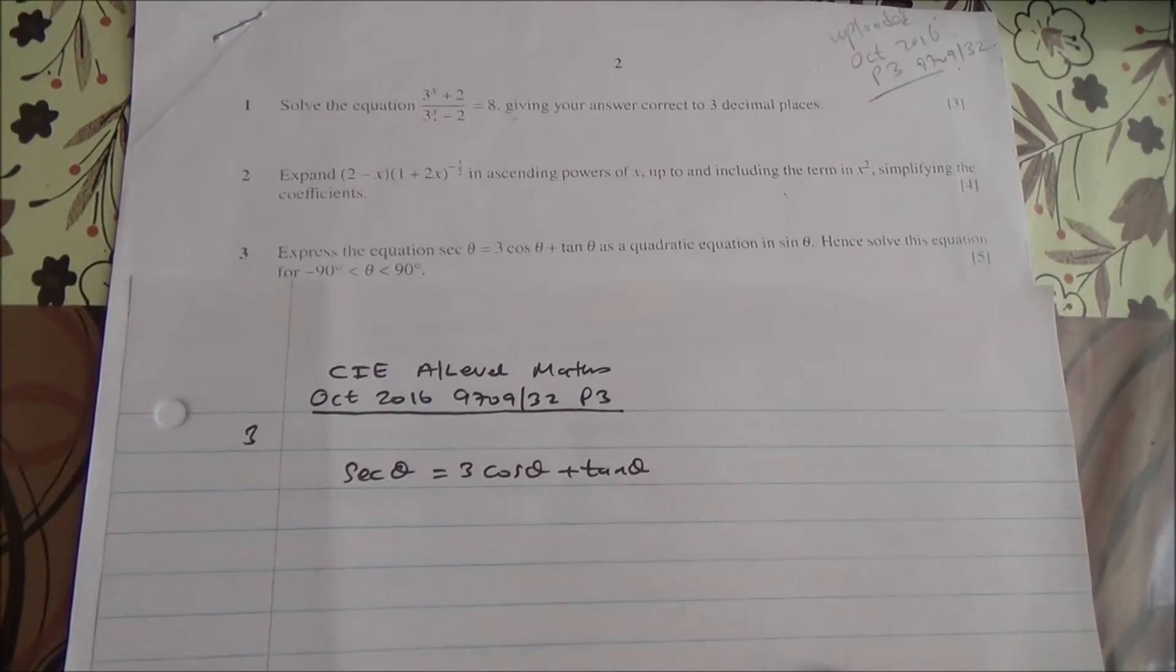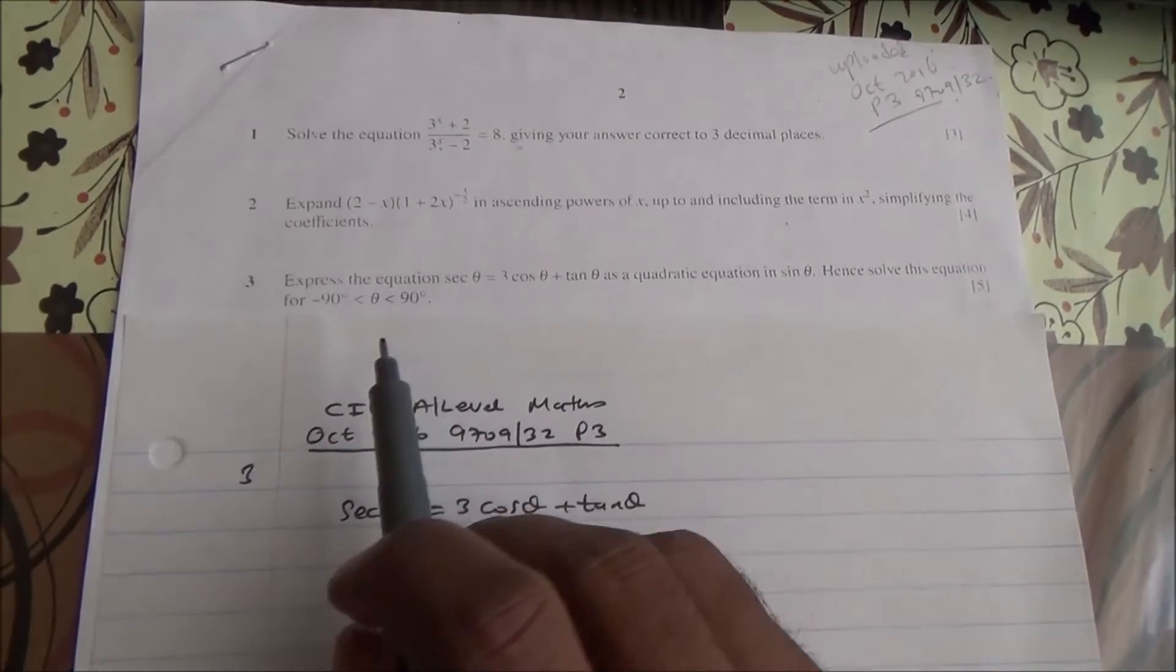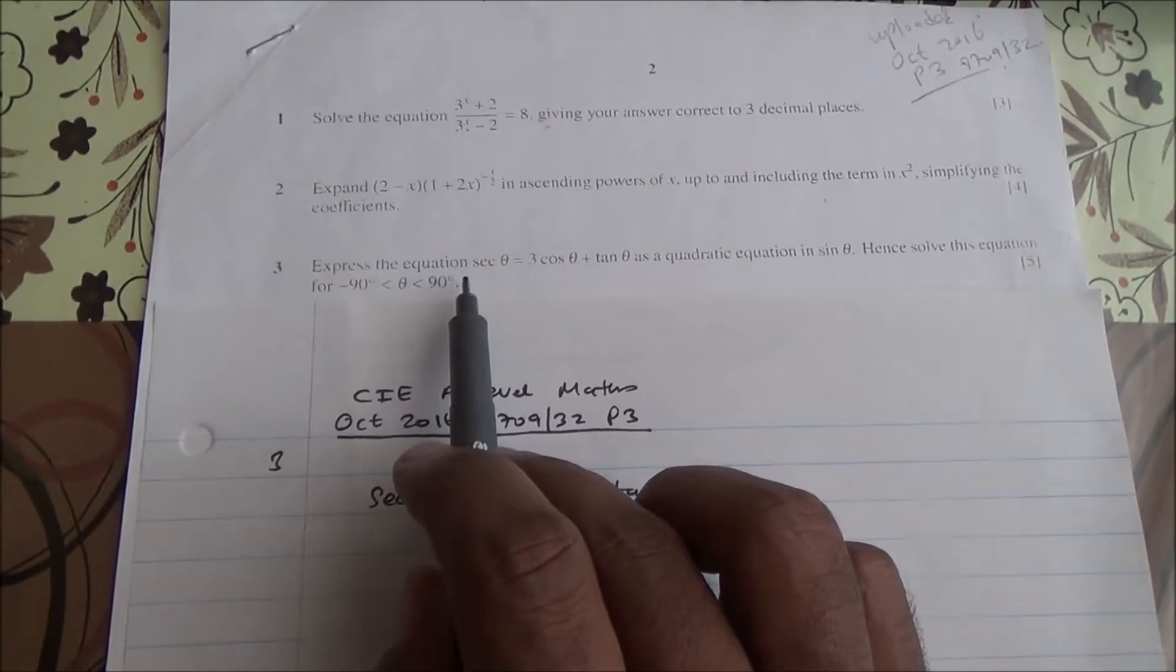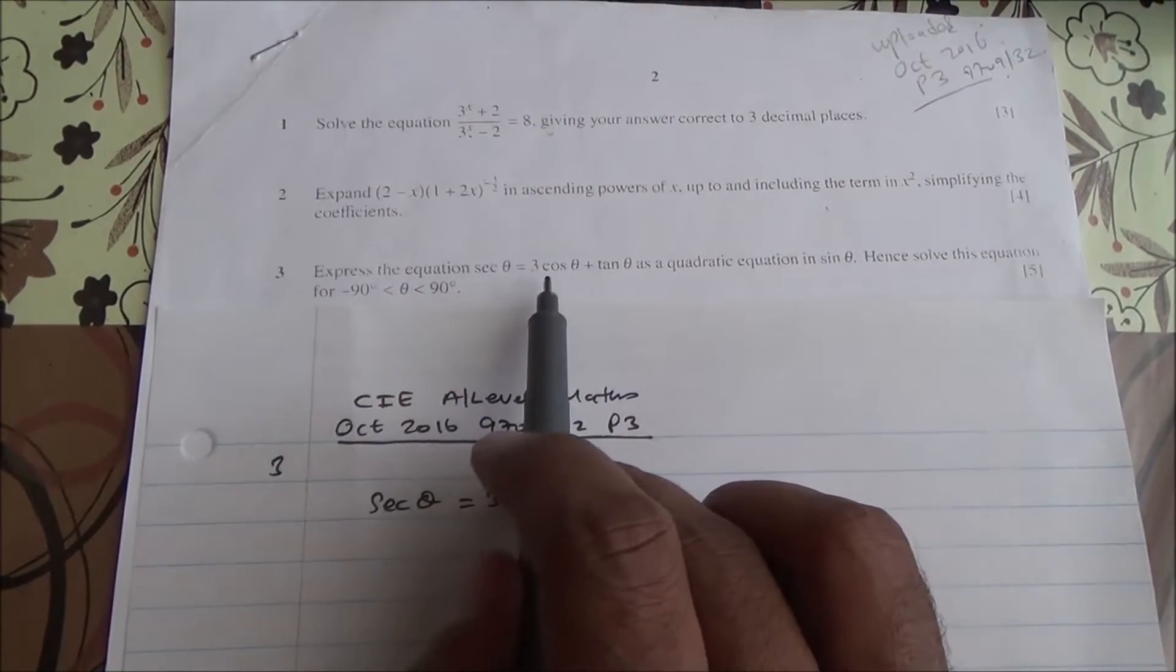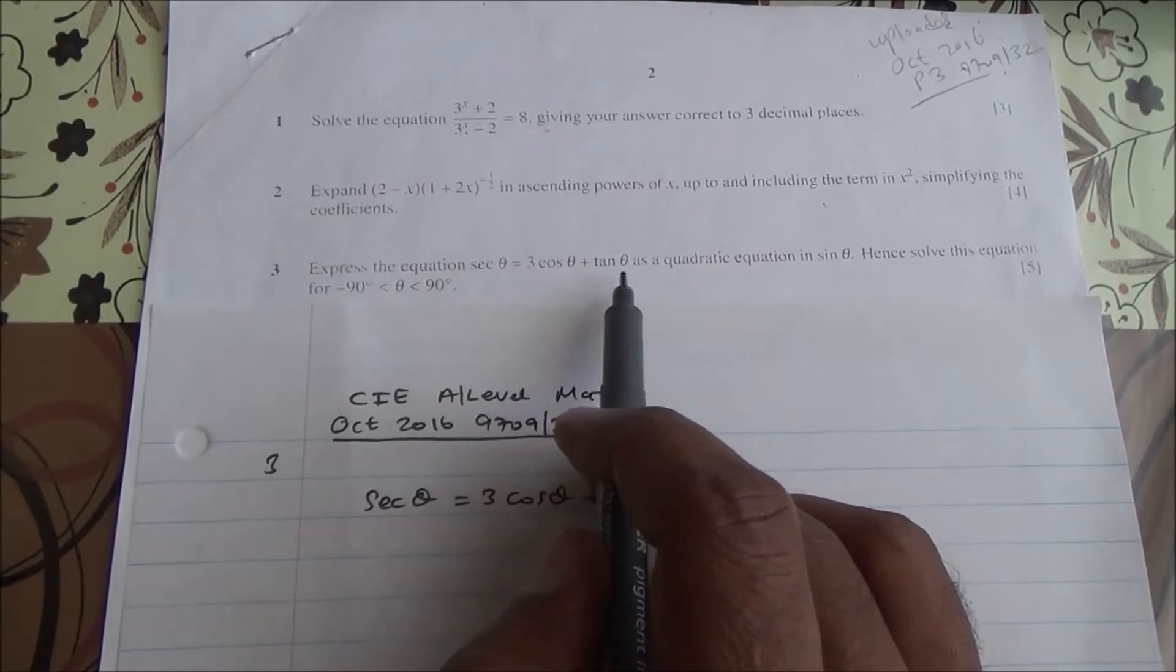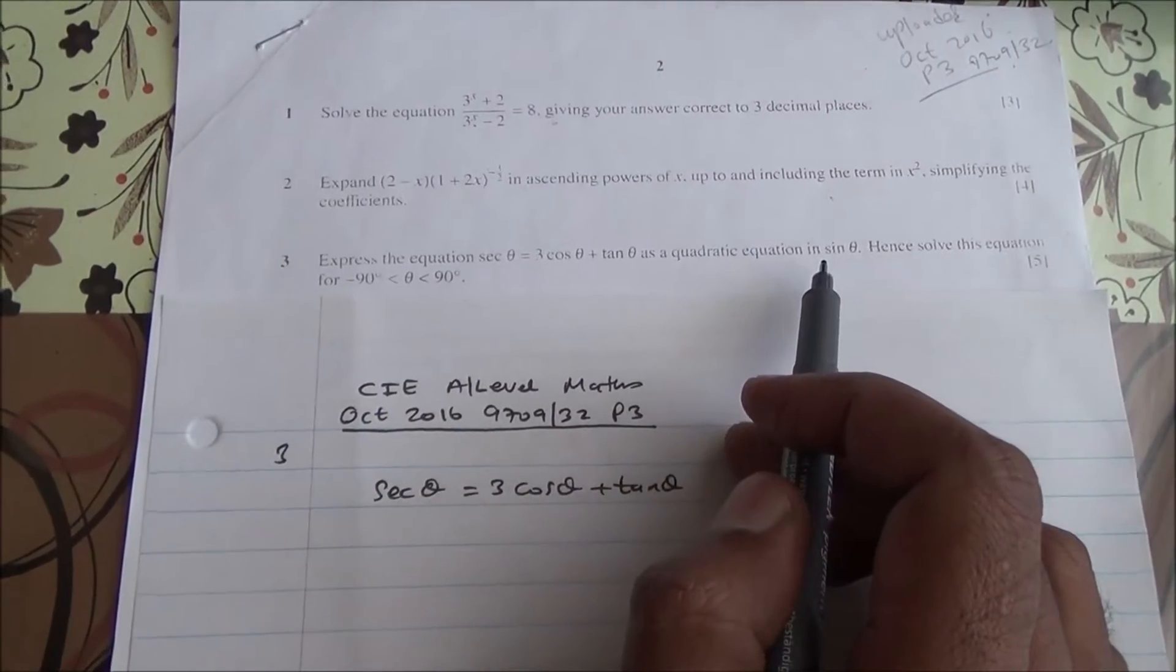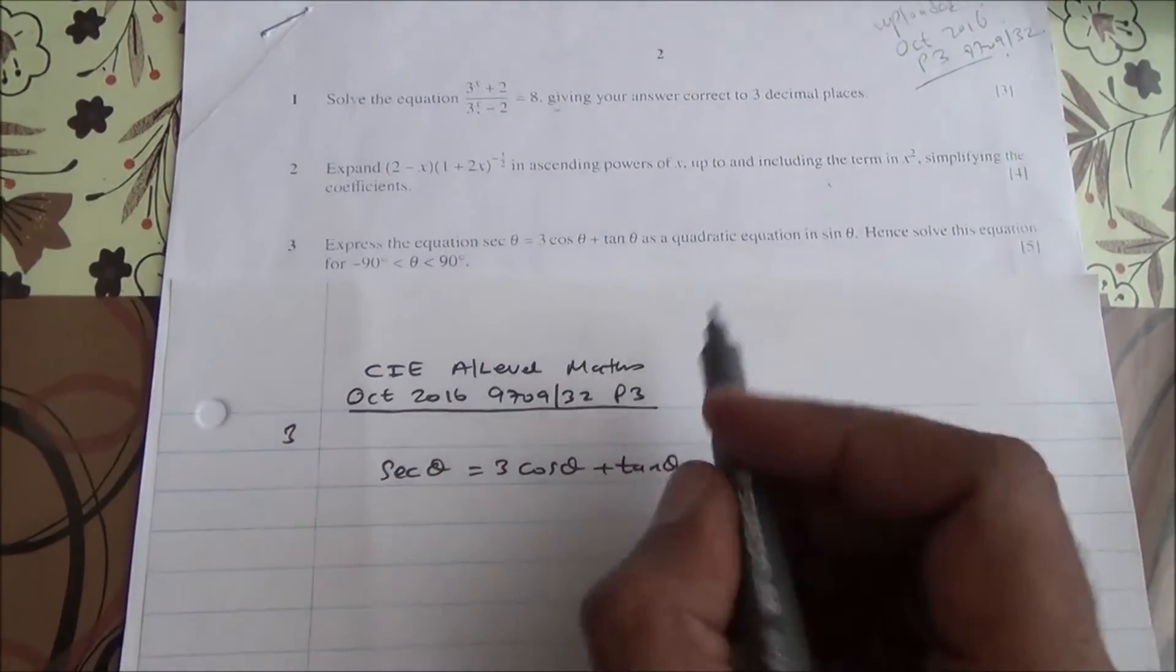Hi, for question number 3 of October 2016 A-level Math HSC Paper 3, we need to express the equation sec θ = 3cos θ + tan θ as a quadratic equation in sin θ, and also solve the equation.